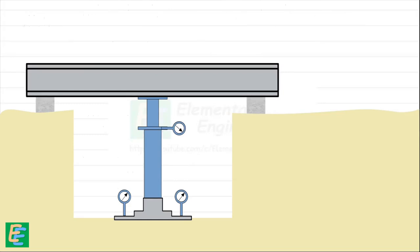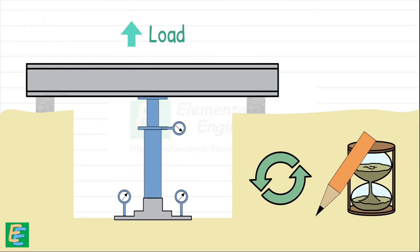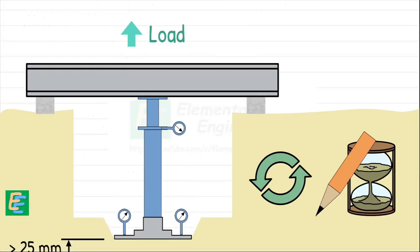After recording the settlement for the current load, we increase the load again and repeat the entire process. We continue the cycle until the plate settles by 25 mm or the soil fails, whichever happens first.